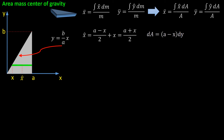dA is the area of the mass element, which is the length multiplied by the height — so it's (a − x) multiplied by dY. dY we can calculate easily from the line equation by differentiating both sides, giving dY = (b/a) dx.